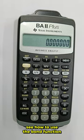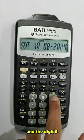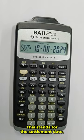In this video we'll see how to use the bond function. First we'll press second and the digit 9. This stands for the settlement date.